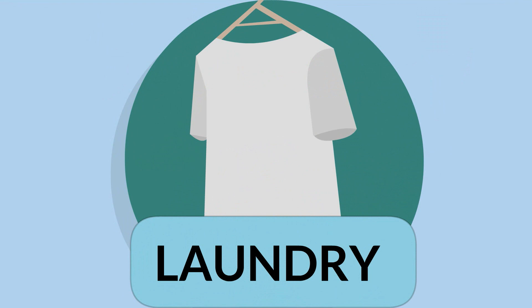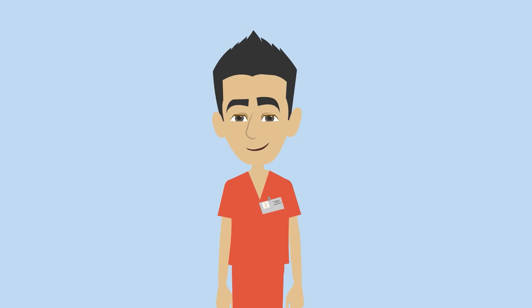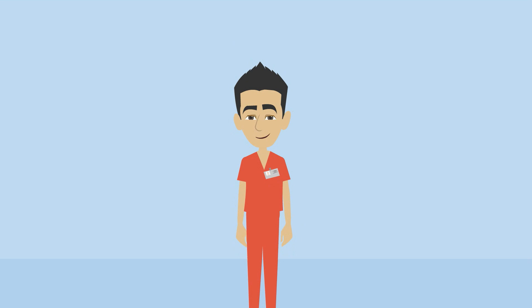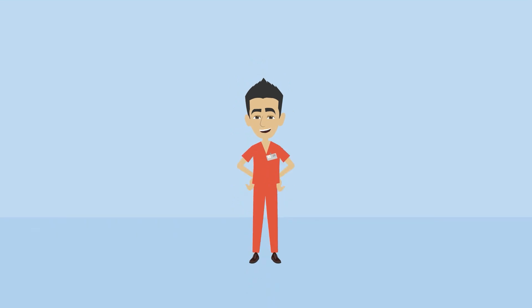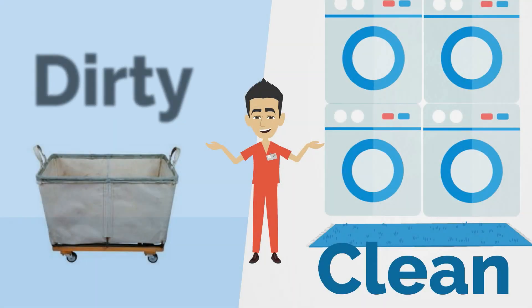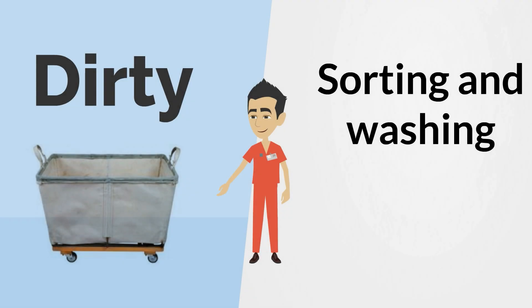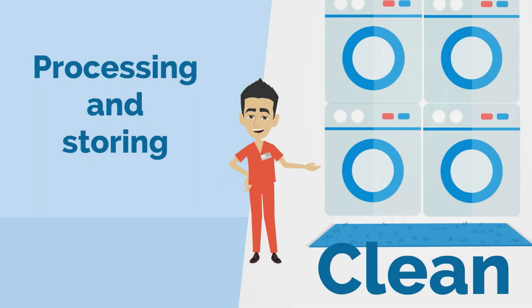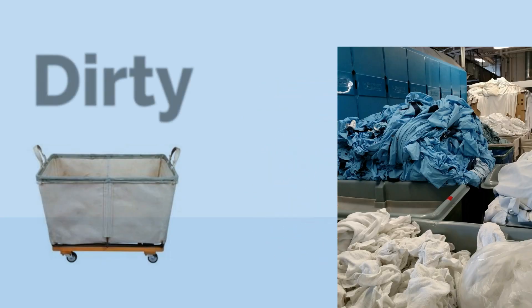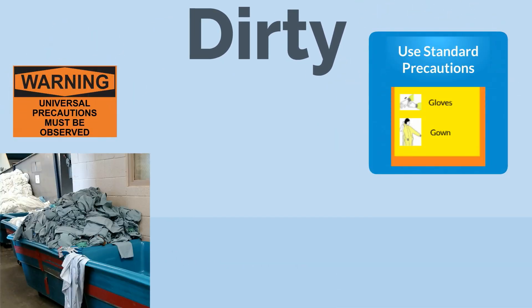Basic infection control begins with the physical characteristics of the laundry facility operation. The area should be large enough to process the volume of items with room to physically separate the dirty laundry area from the clean. The sorting and washing occurs in the dirty area while the processing and storing occurs in the clean area. Mark the dirty area with warning signs stating the presence of contaminated items, and post standard or universal precaution signage in work areas where potentially contaminated items are stored or sorted prior to processing.